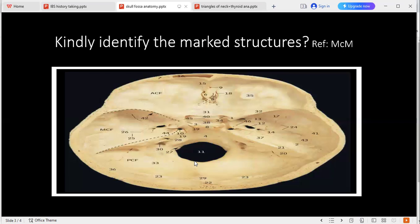Would you be able to identify jugular foramen for me? Jugular foramen is number 30. Very good. Can you please quickly tell me the contents of jugular foramen? It has internal jugular vein, inferior petrosal sinus, glossopharyngeal nerve, vagus nerve, and accessory nerve.